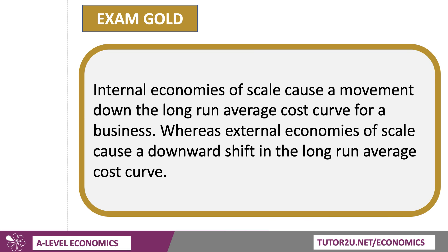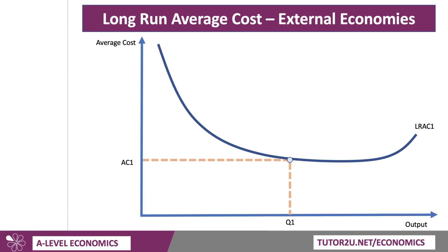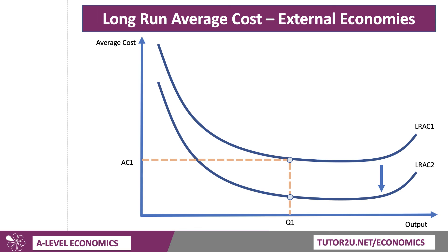External economies of scale arise from the growth of a sector or industry in a particular region, for example, and they tend to cause the average cost curve to fall at all levels of output. So if we go back to our original average cost curve and choose output level Q1 with a unit cost of AC1 — if there are external economies of scale, then the unit cost goes down, so at Q1 instead of AC1 it's now AC2. External economies of scale have the benefit of lowering costs for all businesses in the industry.